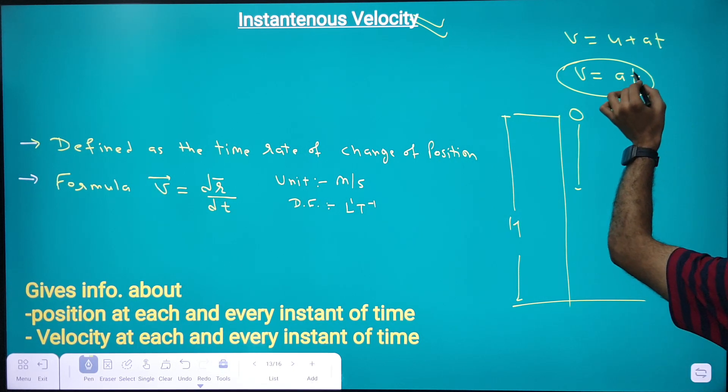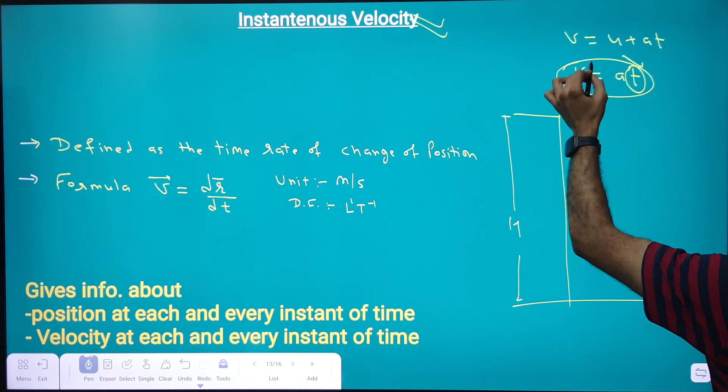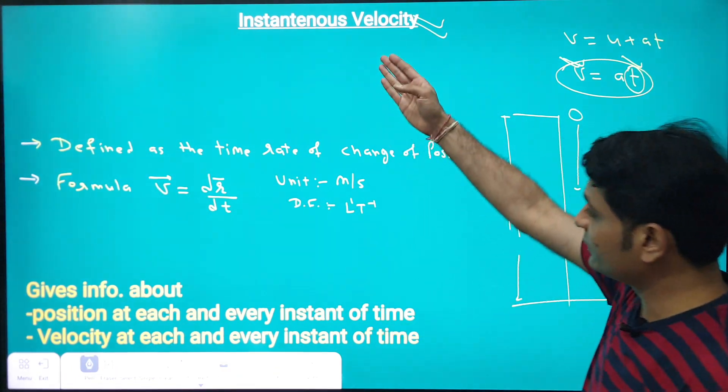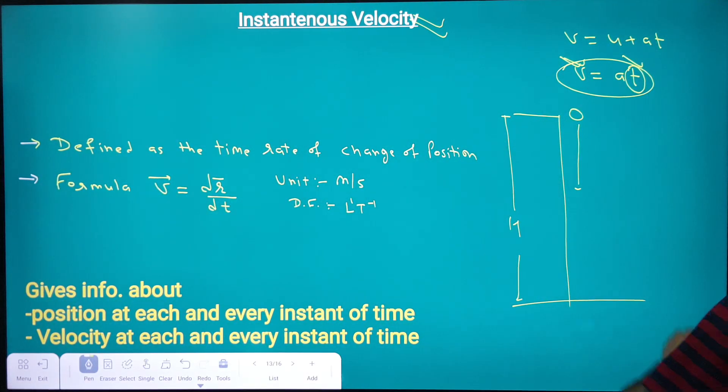With the help of this, for different values of time we can find out different velocities. That's why we can say instantaneous velocity gives information about velocity at each and every instant of time.